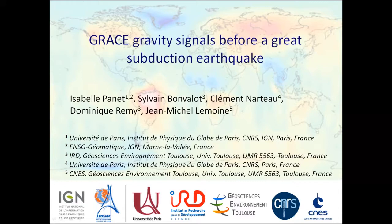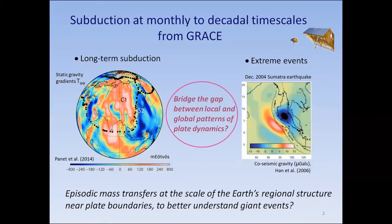I'm presenting our work on the analysis of the Tohoku earthquake from GRACE satellite gravity. We analyze a time series of the Earth's gravity field as mapped from the GRACE satellite mission with intermediate temporal and spatial resolution — monthly temporal resolution and a spatial resolution. With this resolution, we can bridge the gap between local and global patterns of plate dynamics, tackling regional scales and putting a local event into its broader regional context. In this study, we searched for possible episodic mass transfer at the scale of the Earth's regional structure near plate boundaries.